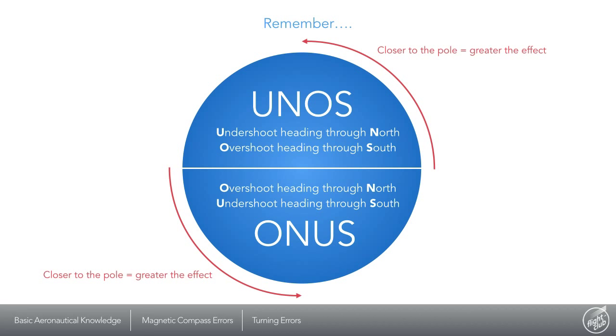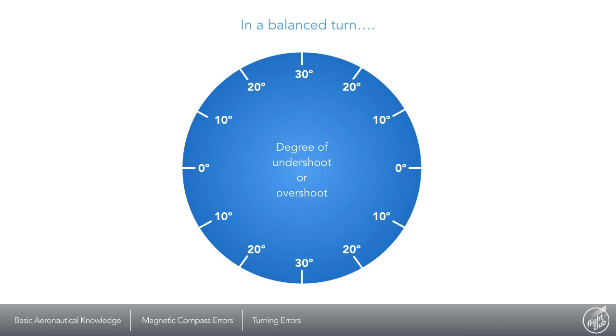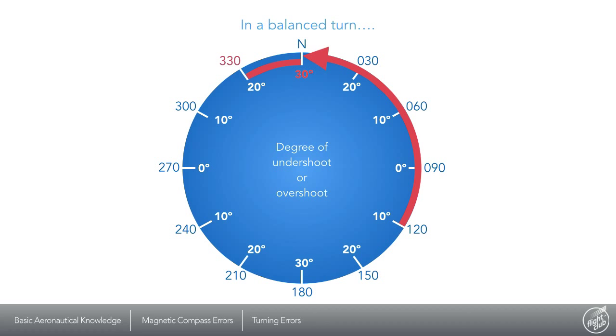How much to overshoot or undershoot by you ask. You may use this guide. For instance a left turn from 120 to a northerly heading will require you to overshoot by 30 degrees. So level off at 330 and wait for the compass to correct itself on your new heading.